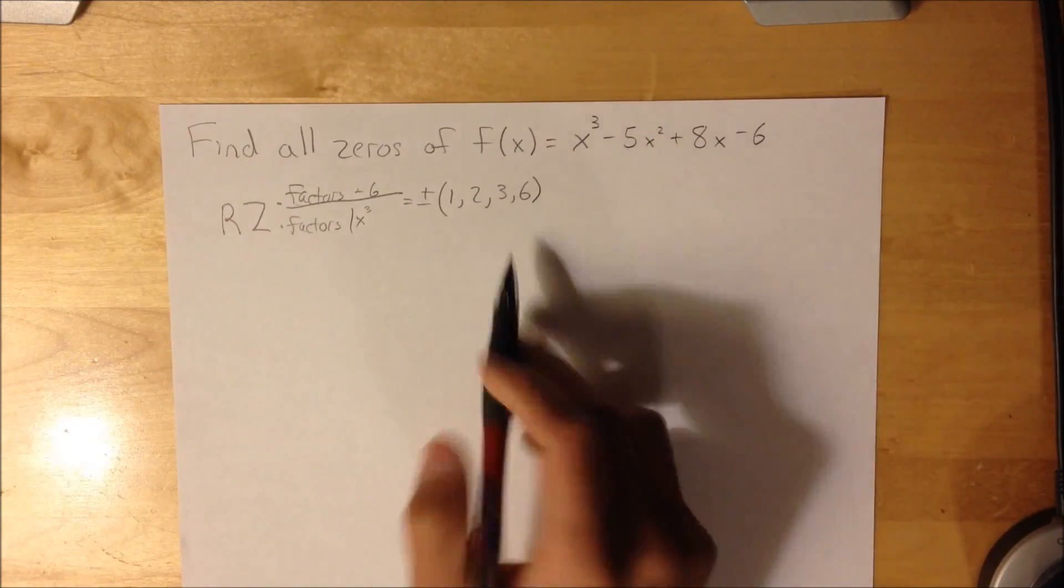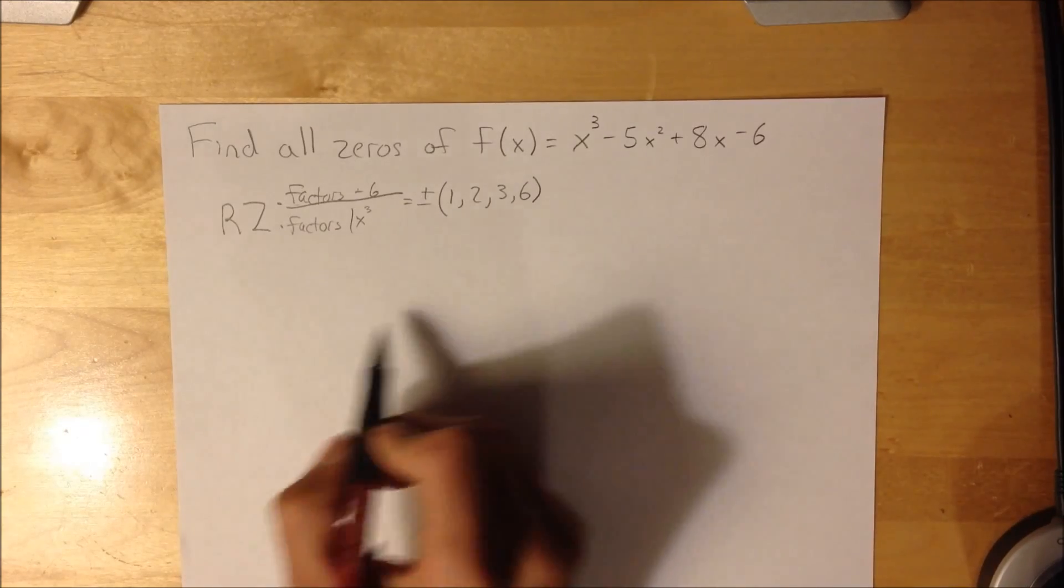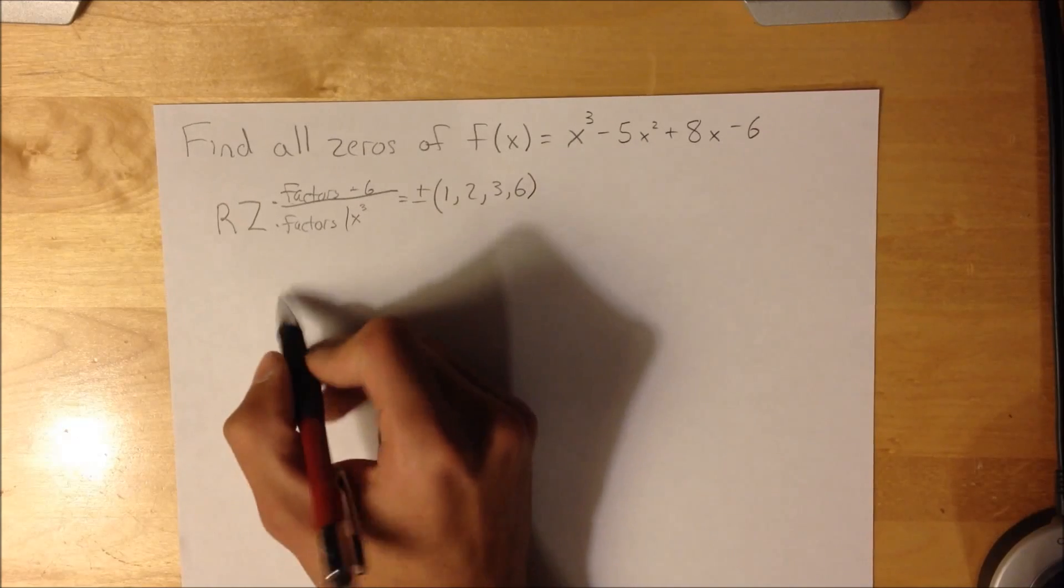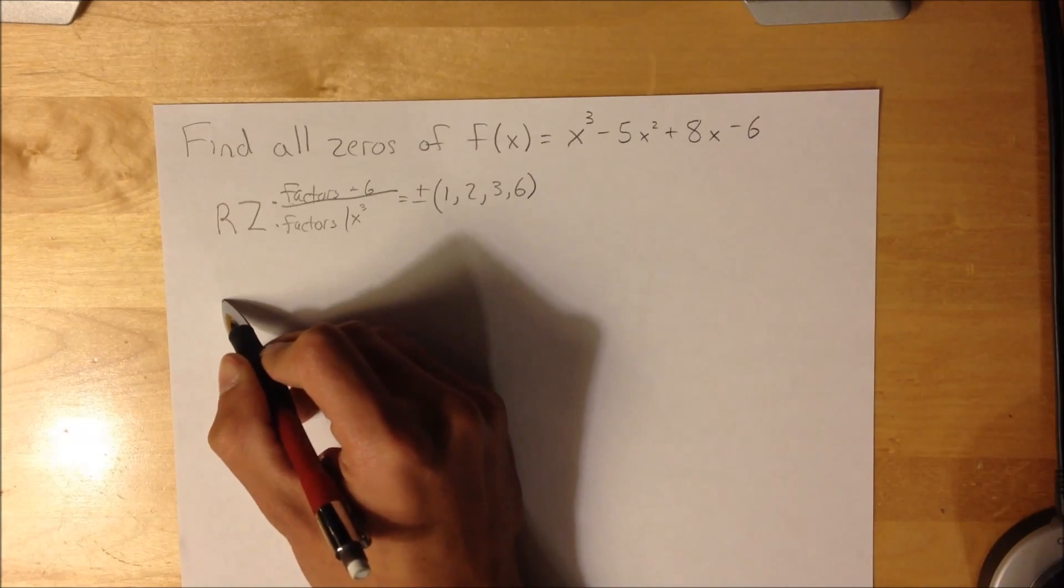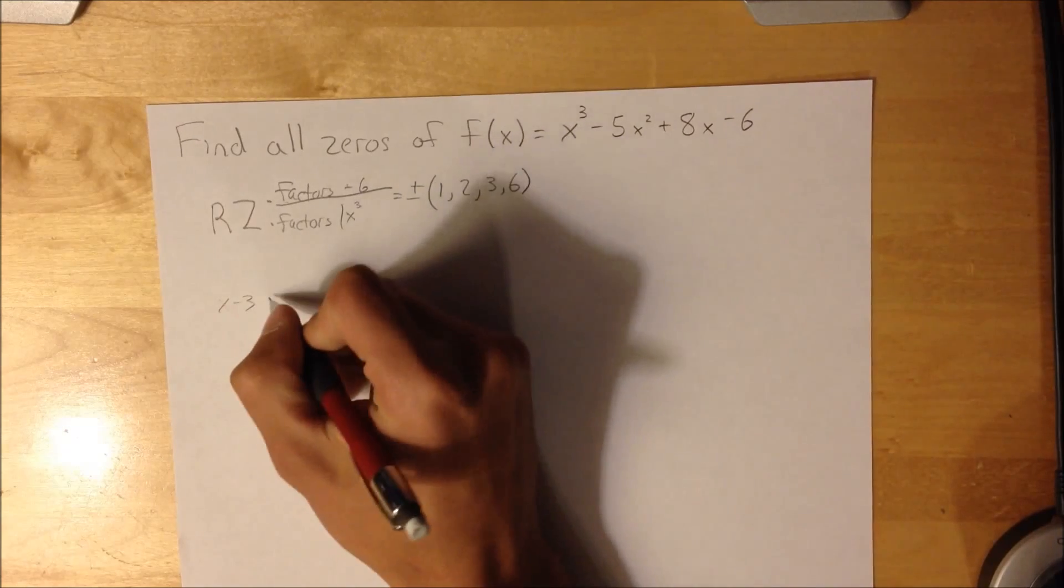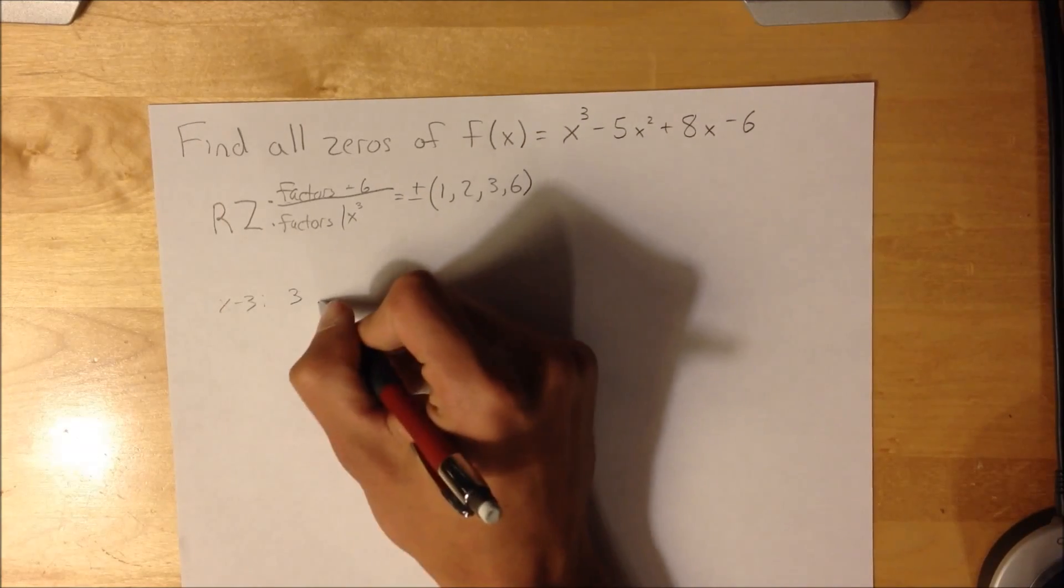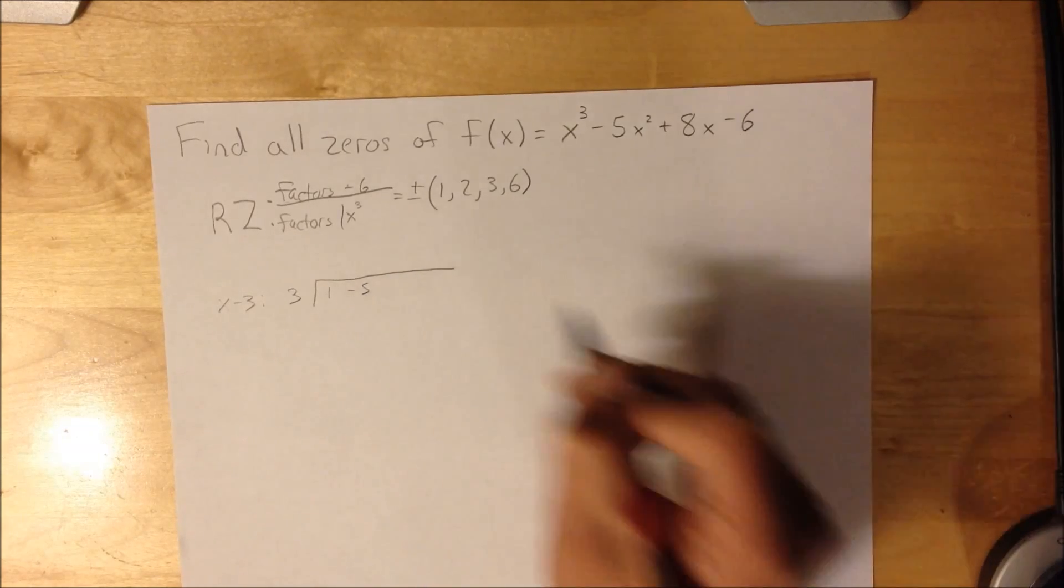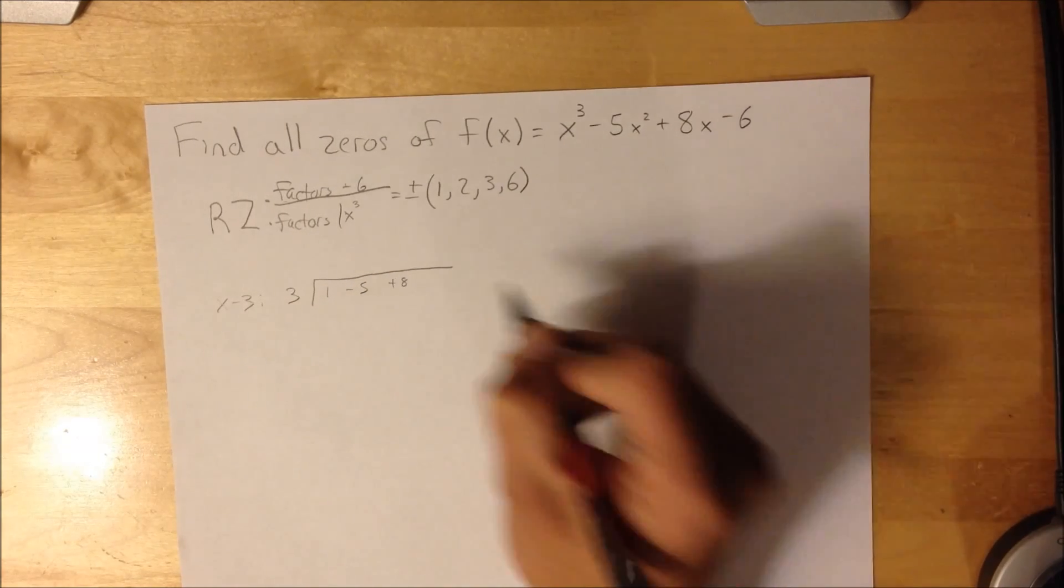using synthetic division to test out which one will work, or which one is a factor, I already know that x - 3 is going to be a factor. But I'll just use synthetic division to figure out what it simplifies to.